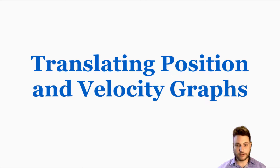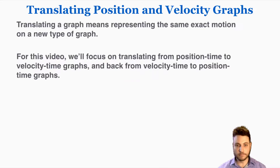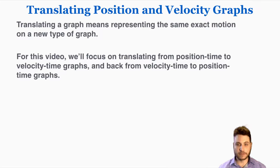This lecture is going to be about translating position and velocity graphs. Translating a graph means representing the same exact motion on a new type of graph. For this video we're only going to focus on translating from position-time graphs to velocity-time graphs and back from velocity-time to position-time graphs.